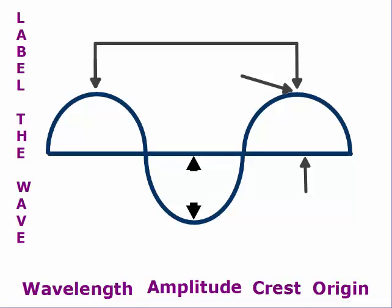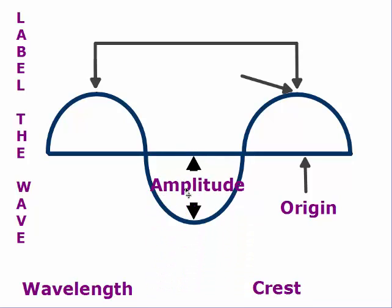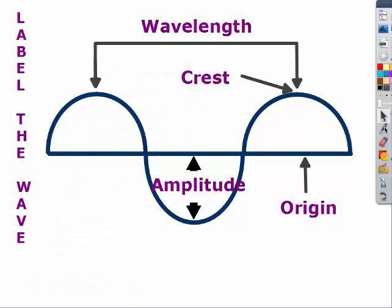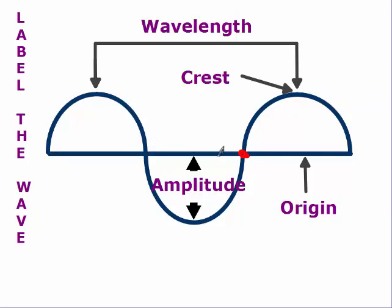The line that cuts through the wave is the origin. The length from the origin to the very bottom or the origin to the very top is the amplitude. The height of the wave is the crest, and the distance from crest to crest is wavelength. Wavelength can also be measured as one entire up and one entire down, so the distance between those two red dots is one wavelength.